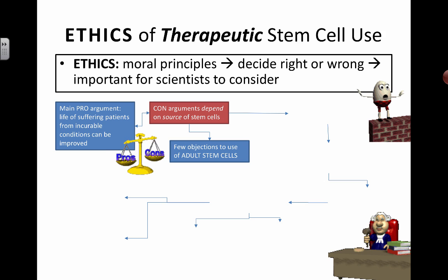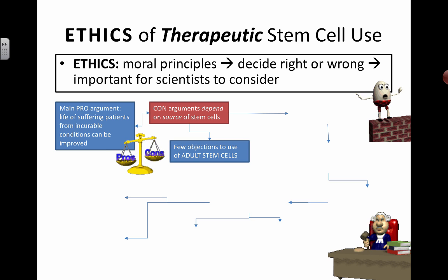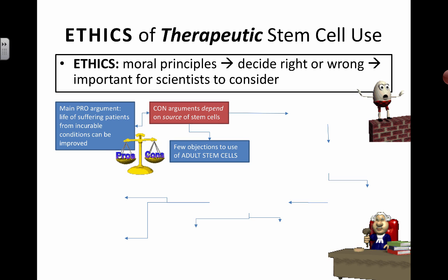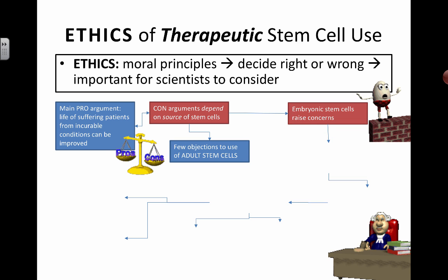Nowadays we have adult stem cells and embryonic stem cells. When this first came out, it was embryonic stem cells that really caused the controversy. When talking about using adult stem cells, no one really has an issue with that — it's an area scientists are trying to develop, though there are some limitations. Some recent Nobel Prizes have been given out regarding induced pluripotent stem cells. The con arguments depend on the source of the stem cells.